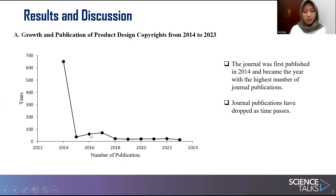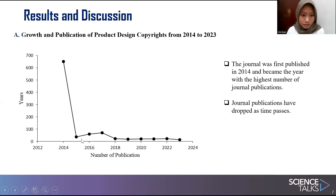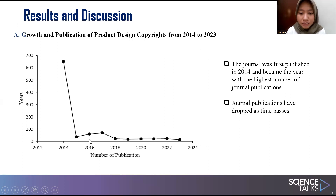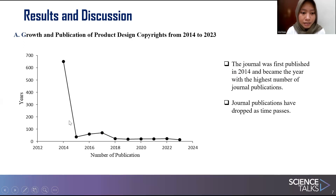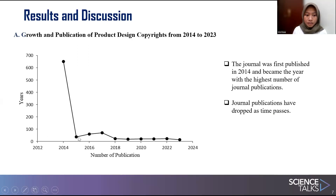In 2014, copyright was an attraction for researchers to discuss this issue. However, a year later, copyright was no longer interesting. This is shown by publication data taken from Scopus. But the data increased significantly in 2017, when the topic of copyright piqued public interest again. Data on copyright publications saw a modest increase in 2017, meaning researchers were again interested in studying the issue. After 2017, the popularity of copyright faded again and experienced a fairly steady decline.